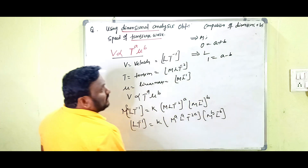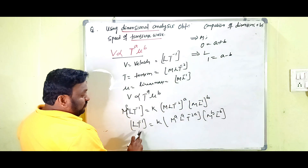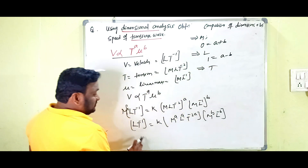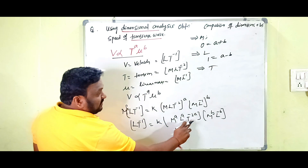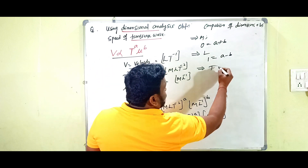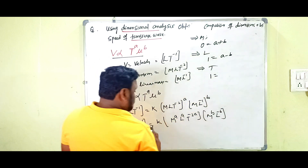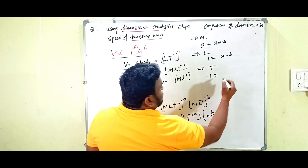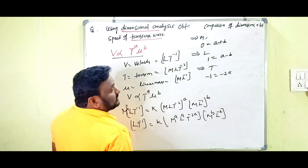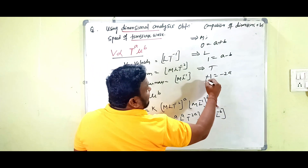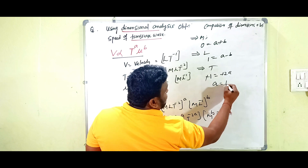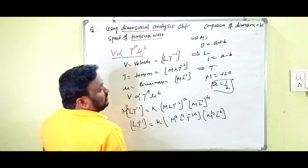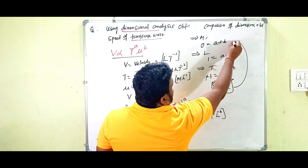Finally, comparing dimensions of T on both sides: on the LHS, T has power −1, and on the RHS we have T^(−2a). So: −1 equals −2a, which gives us a equals 1/2.